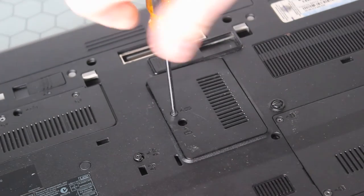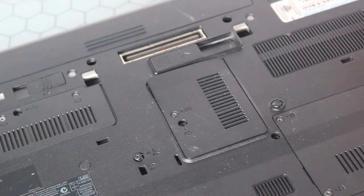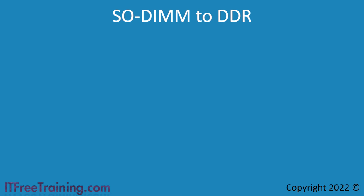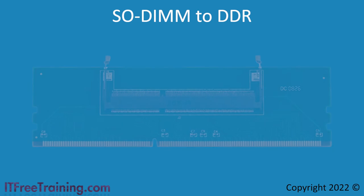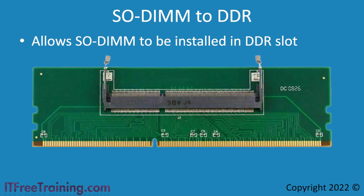Sometimes the cover may not go back on completely flush. If this occurs, push down on the corners and hopefully it will click into place. If it does not, you may need to remove the cover and put it back on again. SODIMM will not be able to be installed in a DDR slot due to the size difference; however, there are adapters on the market which allow SODIMM to be installed in a DDR slot. In the case of a laptop, an upgrade may mean having to replace the memory module due to there only being one slot, meaning the old memory module cannot be used. If you want to get a bit more use of the memory module, you can purchase one of these adapters so it can be used in a desktop.